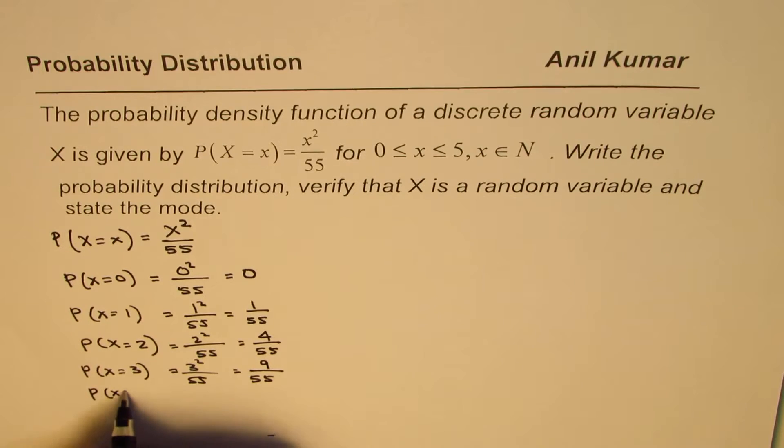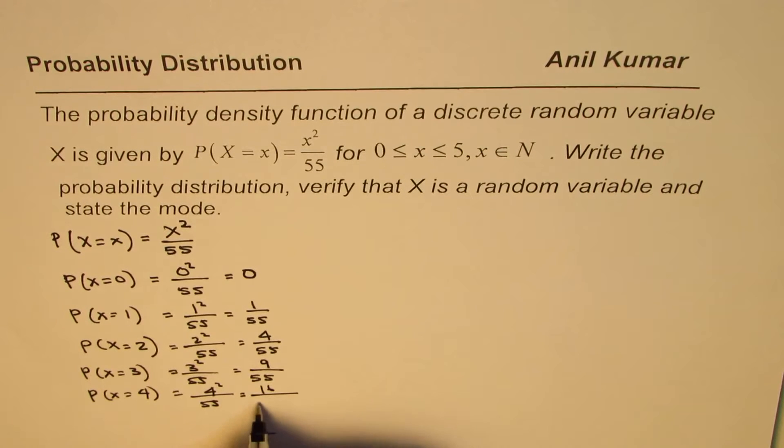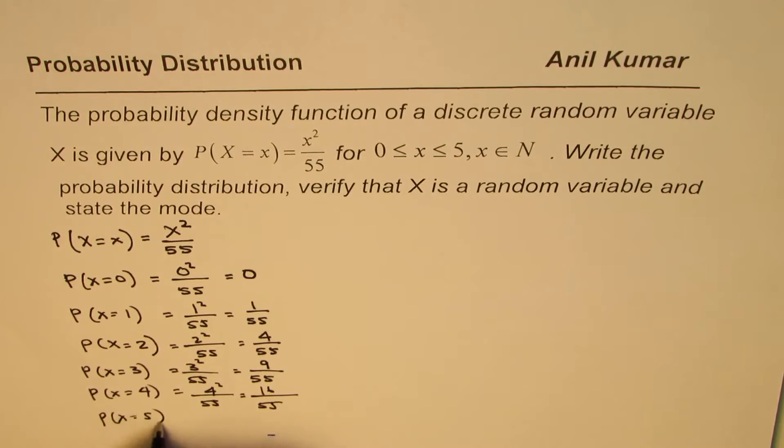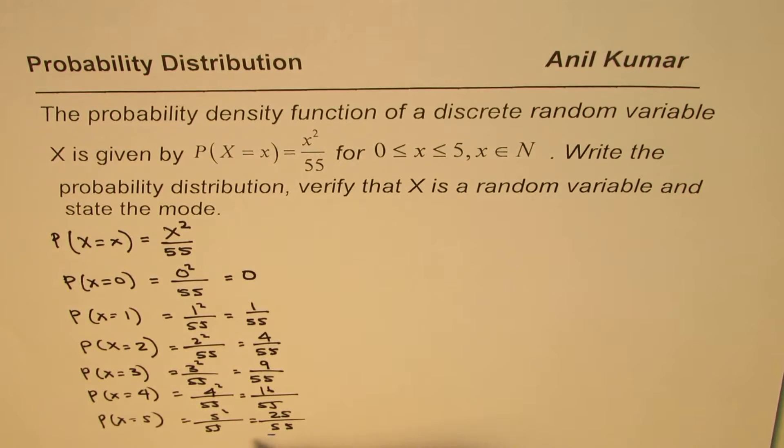For x equals 4, it is going to be 4²/55 or 16/55. And for 5, it will be 5²/55, which is 25/55. So that is what you get.